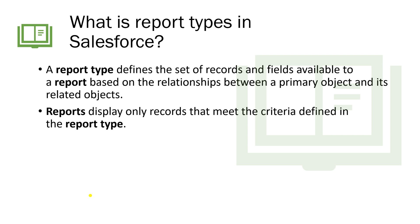The first question that comes to mind is: what is a report type in Salesforce? A report type defines the set of records and fields available to a report based on the relationship between a primary object and its related objects. For example, Account will be the primary object and secondary objects are Contacts, Opportunities, and Cases.